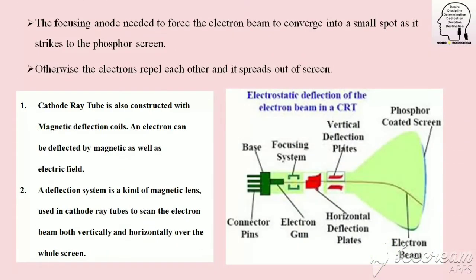The next part is focusing. This is the focusing system. It will spot a beam of electrons on the phosphor coating. If there is no focusing system, the electrons will ripple and spread out across the screen. It will affect image resolution, so the focusing system is essential.